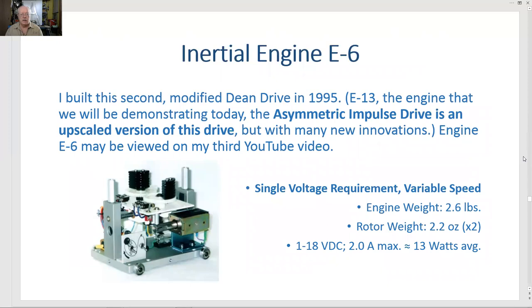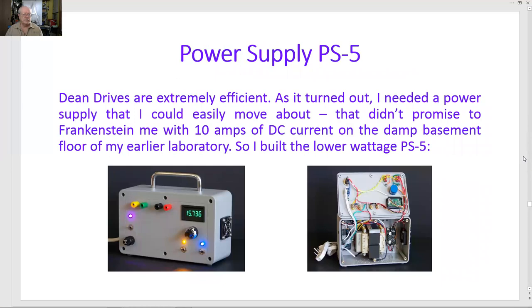Inertial engine E6. I built this second modified dean drive in 1995. E13, the engine that we will be demonstrating today, the asymmetric impulse drive, is an upscaled version of this drive, but with many new innovations. Engine E6 may be viewed on my third YouTube video. This is a single voltage engine for variable speed. 2.6 pounds. Rotors are 4.4 ounces together. 13 watts average.